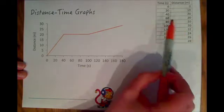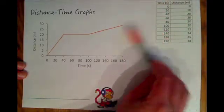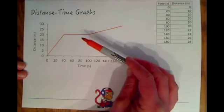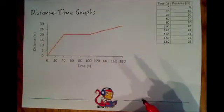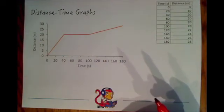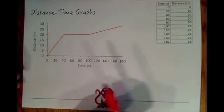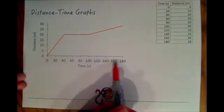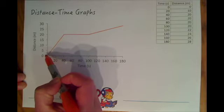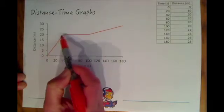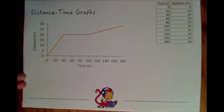In the exam they might ask you to take some data like this and draw your own distance time graph. When you do, all the rules about not joining dots go out of the window. Because we're plotting numbers over time we join all the dots up so we've got one continuous line for our distance time graphs.